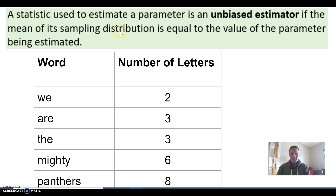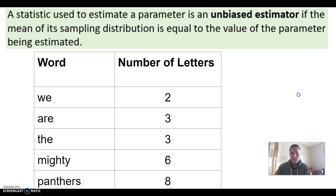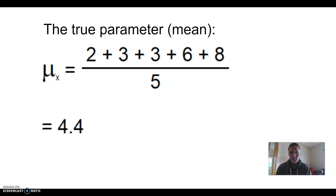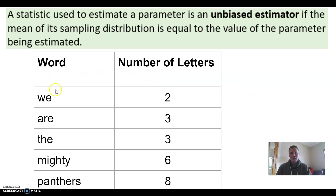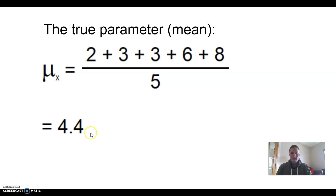What are we talking about with the sampling distribution? We take each sample of size two. The mean of all of the sample means — would that average out to be 4.4? Because the true population mean, where X is the number of letters in a word, is 4.4.